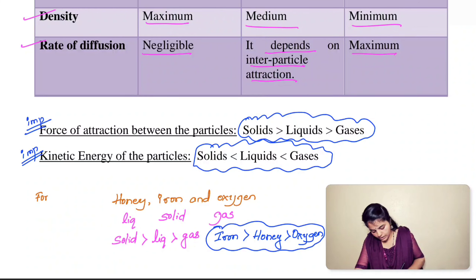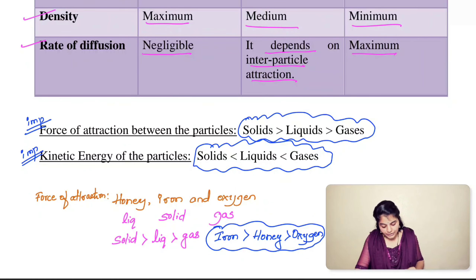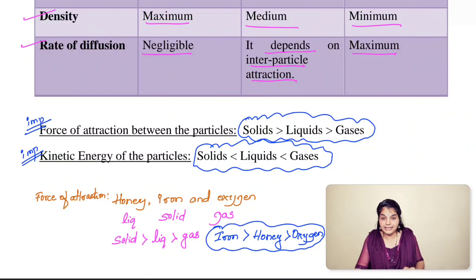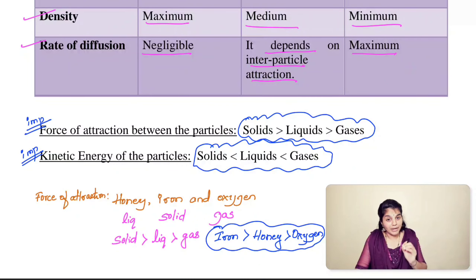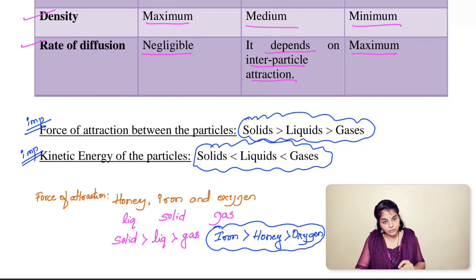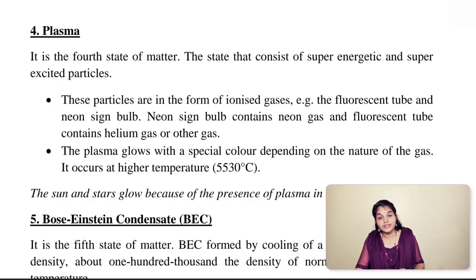Similarly for kinetic energy: solids have the least kinetic energy, liquids have medium, and gases have maximum kinetic energy. Remember that kinetic energy of particles depends on temperature — as temperature increases, kinetic energy of particles also increases.